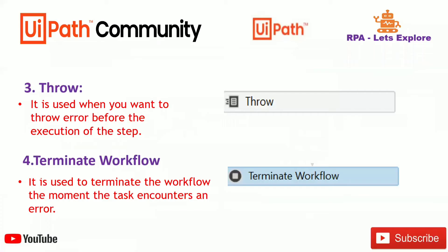The next activity is terminate workflow. Terminate workflow is used to terminate the workflow the moment a task encounters an error. Whenever an error occurs, this workflow will directly terminate.